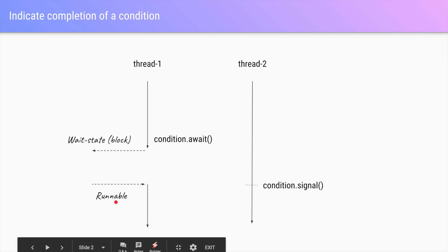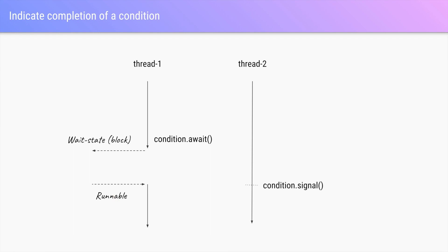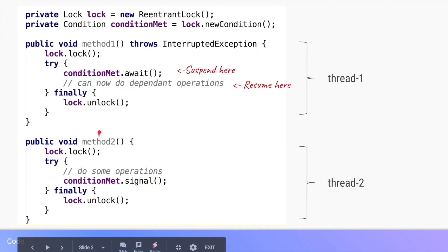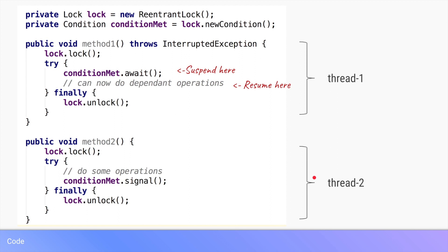The JVM will wake those threads up, so their state will go from wait state to runnable state. Let's look at it from a code perspective. Let's say we have two methods — method one and method two — where method one is run by thread one and method two is run by thread two. Both methods use the same lock of type ReentrantLock, and we are creating a new condition out of this lock. The name of that condition variable is conditionMet. Both threads will initially acquire the lock and then trigger a certain method on the condition.